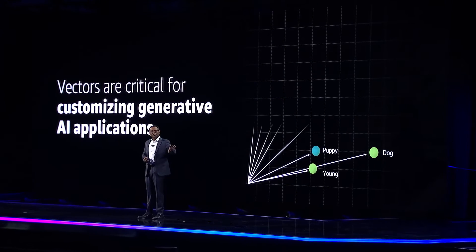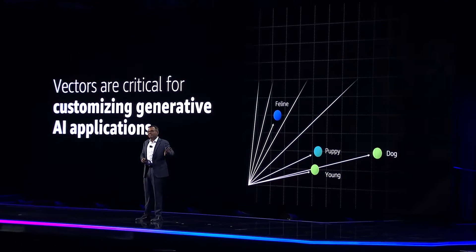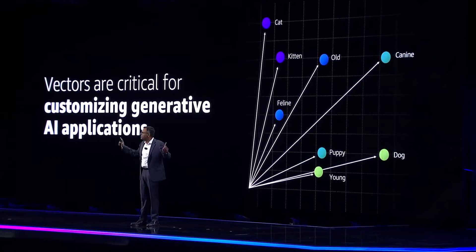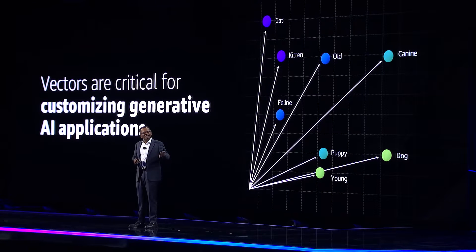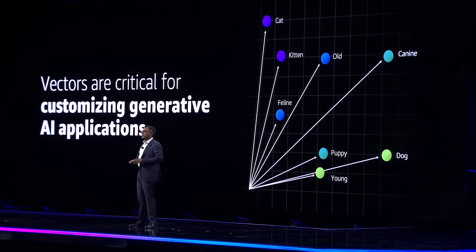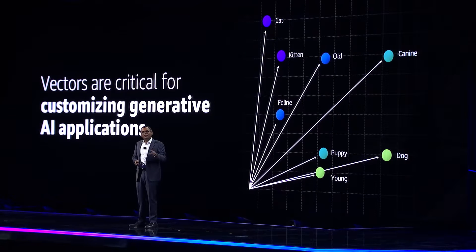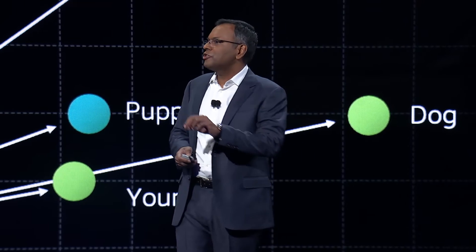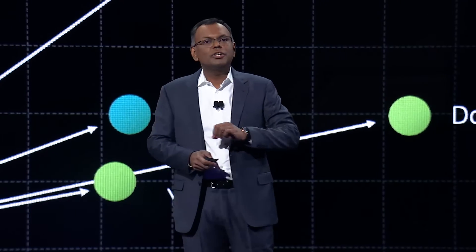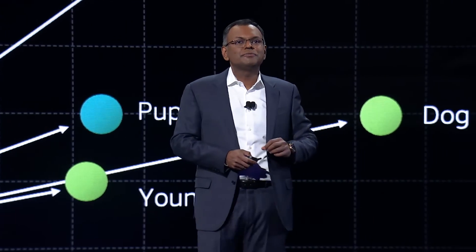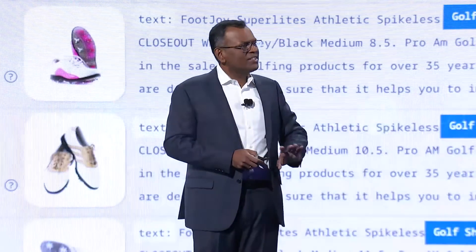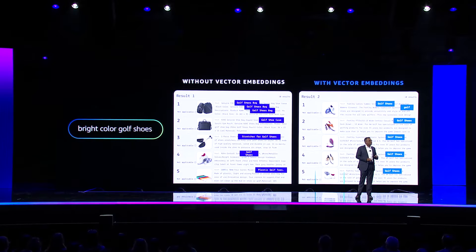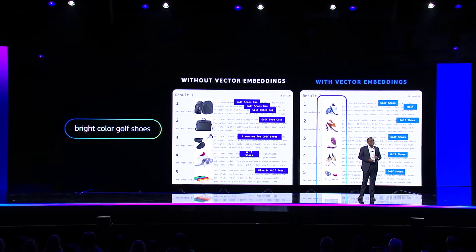Vectors allow your models to more easily find the relationships between similar words. For instance, a cat is closer to a kitten, or a dog is closer to a puppy. This means your foundational models can now produce more relevant responses to your customers. Vectors are ideal for supercharging your application, like rich media search and product recommendation.